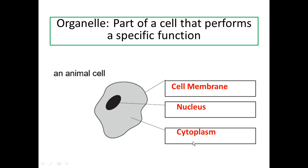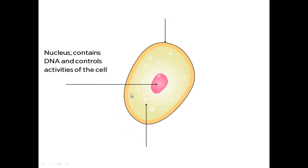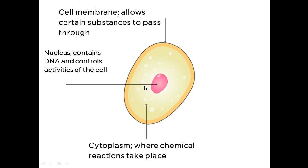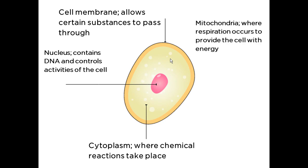Each organelle has a specific function. The nucleus contains the DNA and its function is to control every single activity that happens in the cell. The cell membrane controls everything that goes in and out of the cell. The cytoplasm is the jelly inside the cell where every single chemical reaction takes place. Also worth mentioning is the mitochondria, which is where respiration will occur.